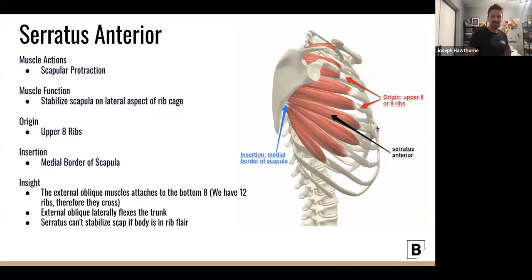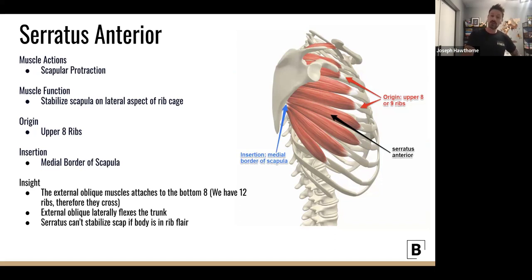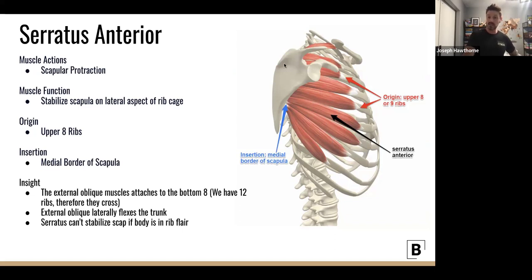The serratus anterior attaches to the upper eight ribs. The external obliques attach to the lower eight ribs. With only twelve ribs total, they overlap — and that's crucial, because they can act in opposite ways to help flex the trunk. The external obliques help flex the trunk. It's important because the serratus anterior can't do its job stabilizing the scapula during retraction and elevation if we are stuck in inhalation — if there's a major rib flare.